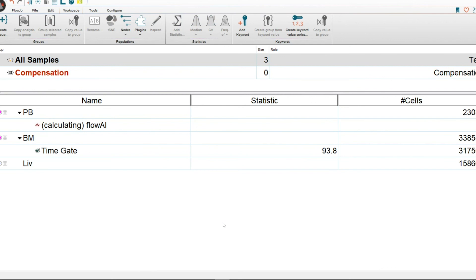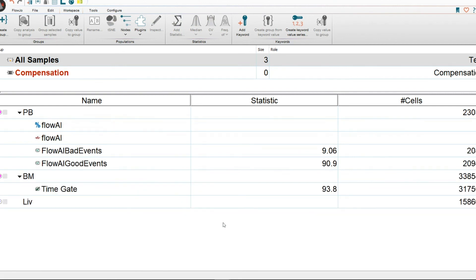And in a matter of a minute or less, we will get an output of the FlowAI good events and the FlowAI bad events like so. Well, as you can now see, we got about 9% as FlowAI bad events and about 91% were characterized as FlowAI good events.